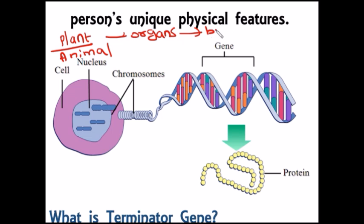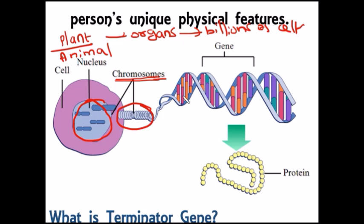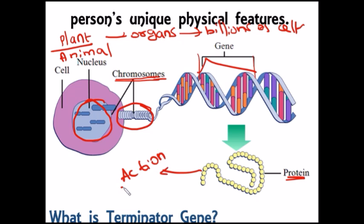Organs are made up of billions of cells and each cell has a nucleus. The nucleus contains many chromosomes, and each chromosome has hundreds of genes. Each gene codes for a particular protein which does a particular action, like muscle contraction or transmission of nerve impulses.